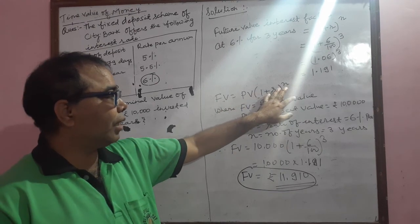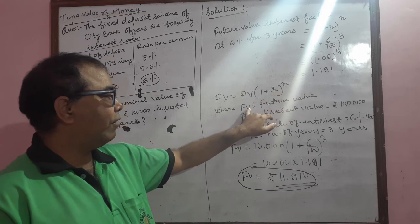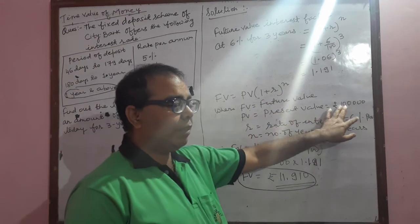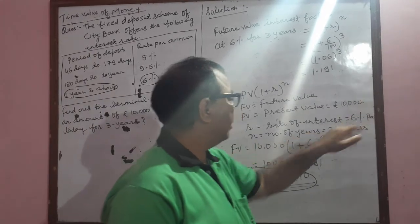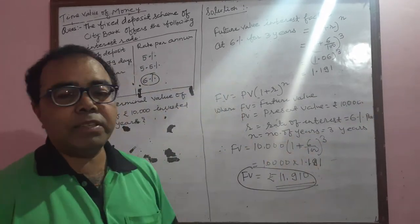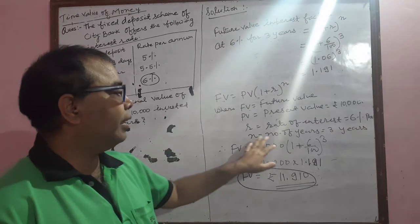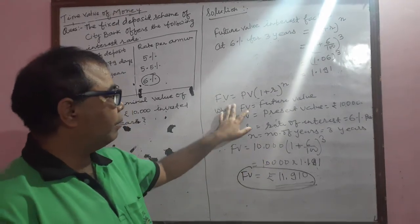FV is the future value, PV is the present value which is given as 10,000, r is the rate of interest given as 6% per annum, and n is the number of years. So future value is the present value (1 + r) to the power n.